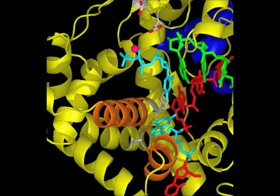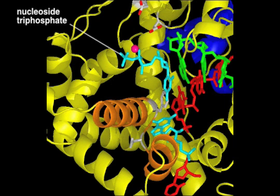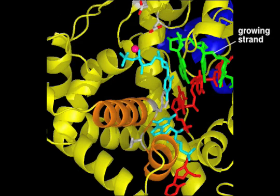In this view, the details of nucleotide selection at the active site are shown, with the incoming nucleoside triphosphate and the template nucleotide in light blue. The growing strand is green, and the template strand is red.